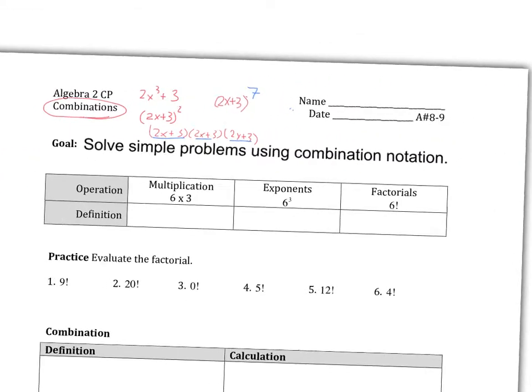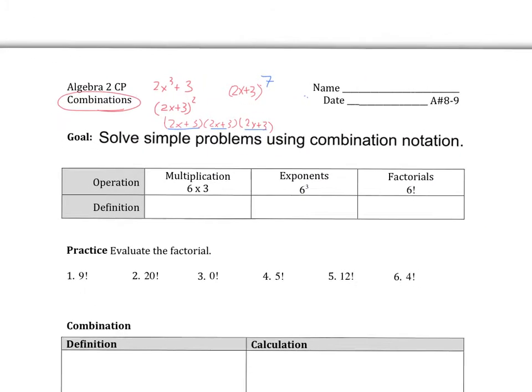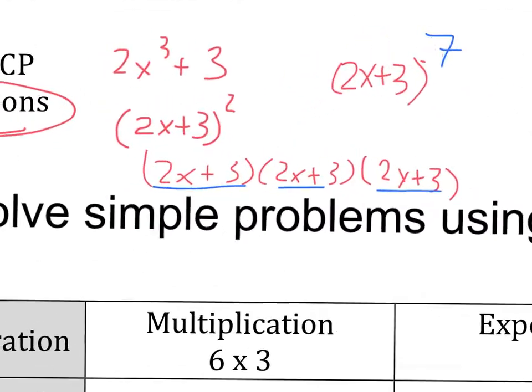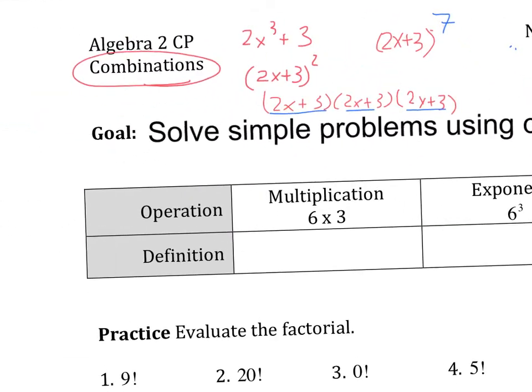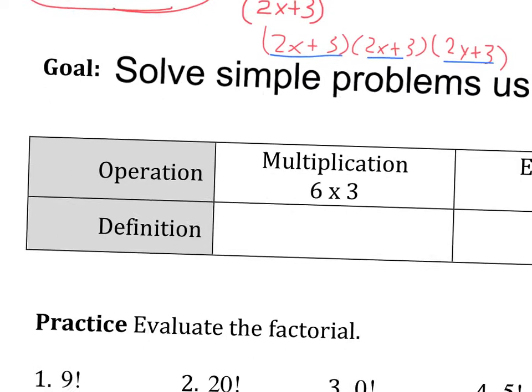Okay, so before we get to combinations and the explaining of it, actually, it might be wise for us to check something here. Before we can do combinations, which is funny, because we have to know, before we can do this theorem, we have to know combinations. But before we can do combinations, we have to learn a new symbol.